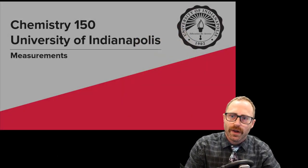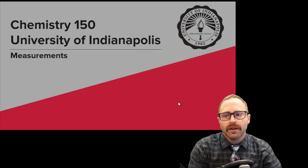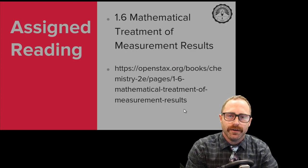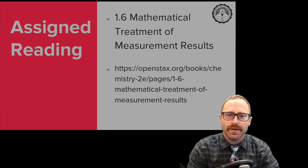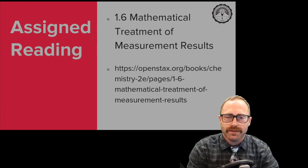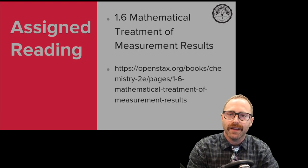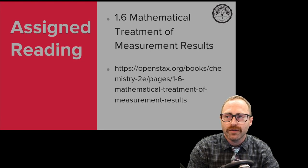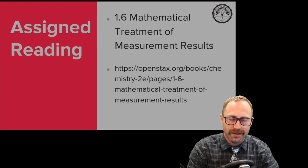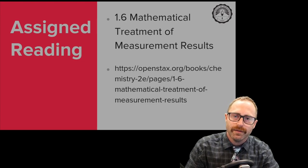Hello, my name is Brad Neal with the University of Indianapolis. Today we're going to be talking about the final section of the measurements chapter in our book. So let's go ahead and let's get started. Your reading assignment for this section is 1.6, the mathematical treatment of measurement results. And we're going to go over some of the key highlights of the chapter now as well as work some problems. The link to this reading assignment will also be in the description on the YouTube video page.